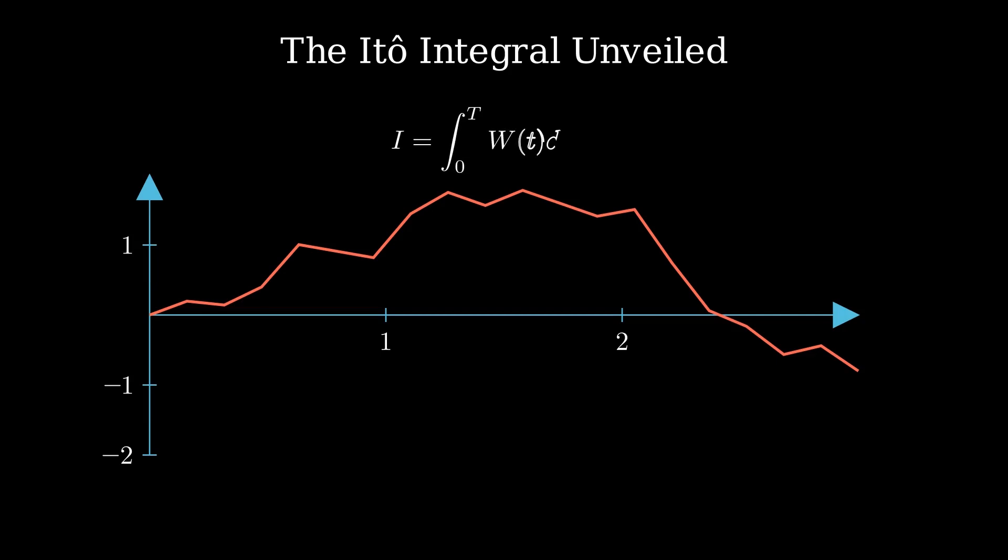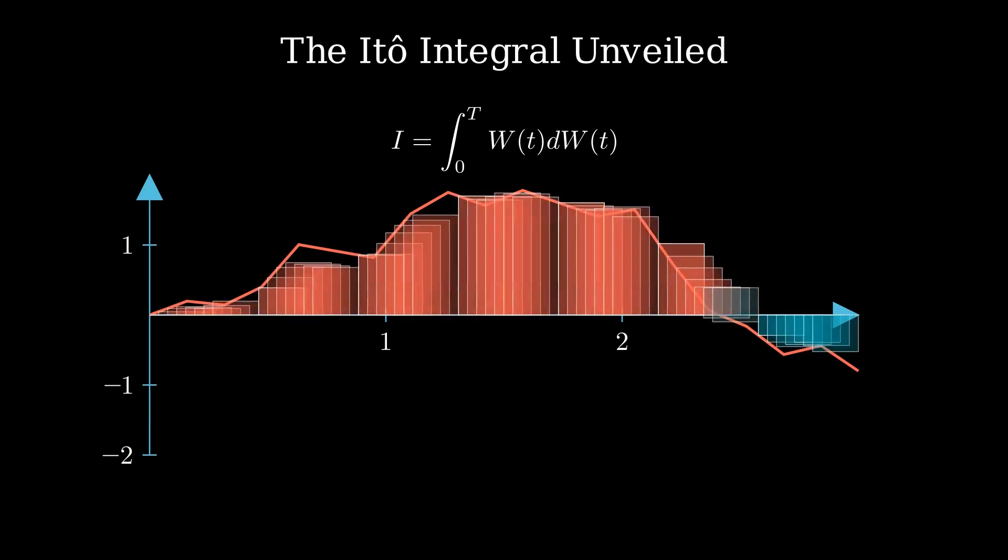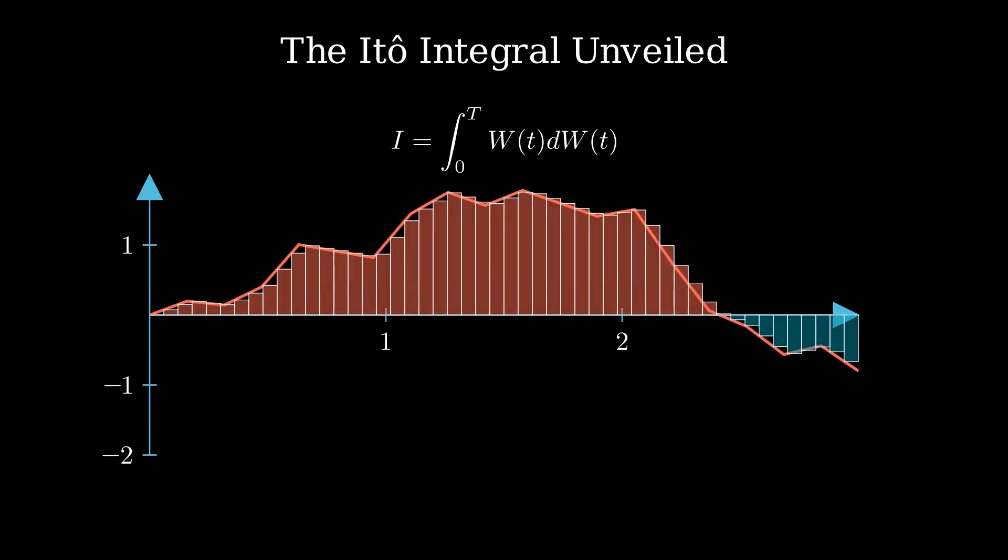Here's I equals the integral from zero to t of W(t) dW(t). We break time into bits, multiply stock levels by random jumps. As we slice time finer, the sum gets more precise. Watch the sum build. It's chaotic, yet it lands at ½W(t)² - ½t. Market magic at work.